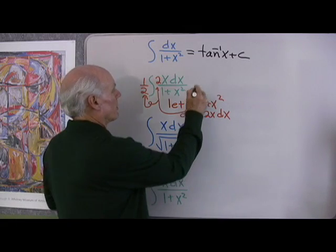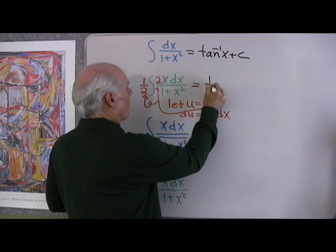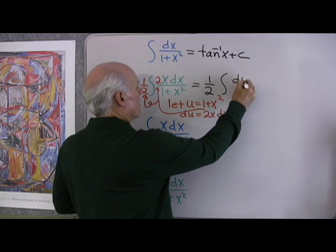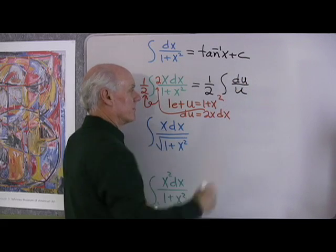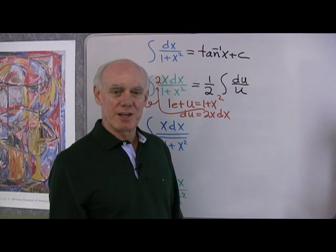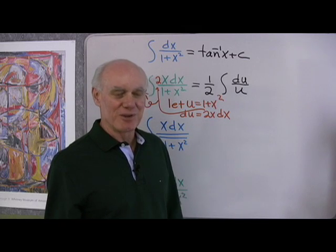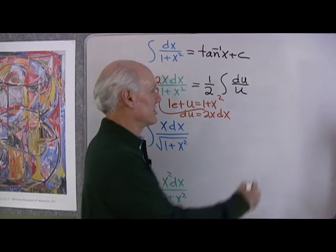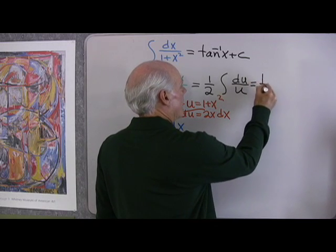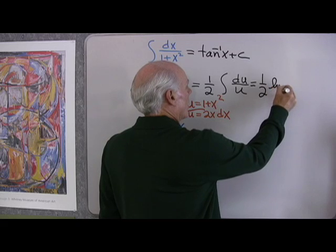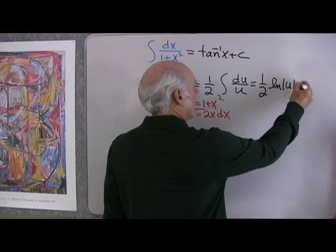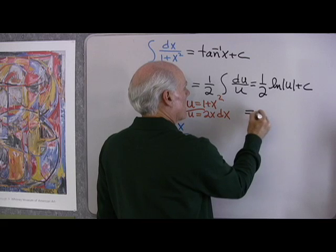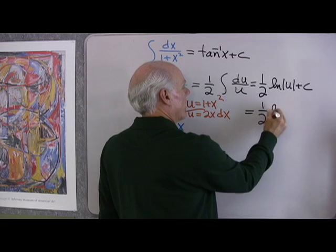So what do we end up with here? Well, this looks like 1 half the integral of du over u. I know how to integrate that, that's just logarithm of the absolute value of u plus c. So this will be 1 half natural log absolute value of u plus c, which would be 1 half natural log...